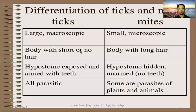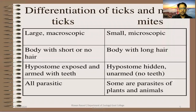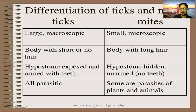Ticks are large and macroscopic, while mites are smaller and microscopic. Ticks have a body with short hair or no hair, but mites have long hair-like projections. Ticks have a hypostome that is exposed and armed with teeth, while mites have a hypostome that is hidden and unarmed with no teeth. Ticks are all parasitic, while mites are parasitic of plants as well as other animals.